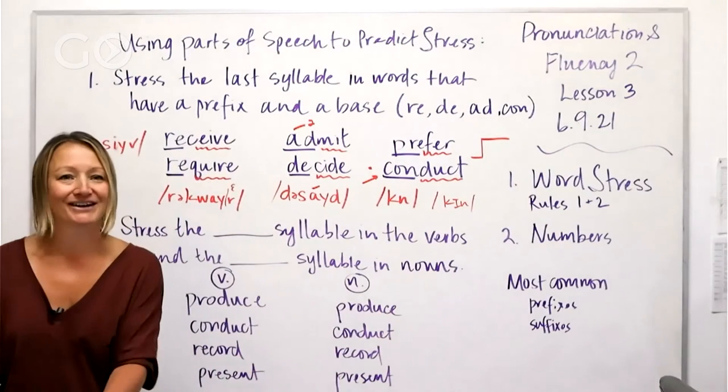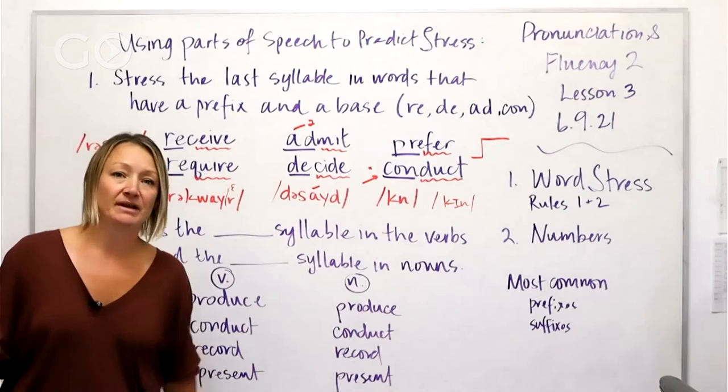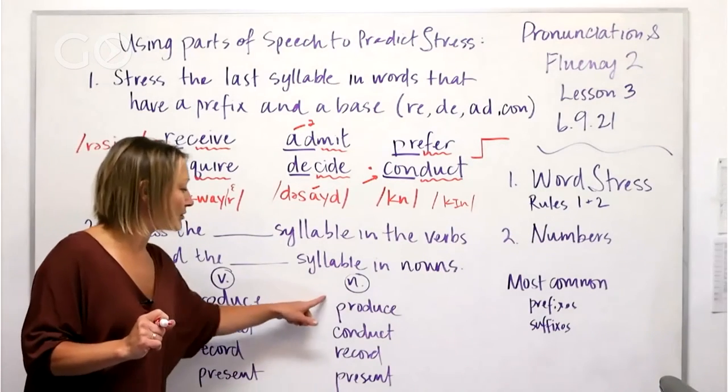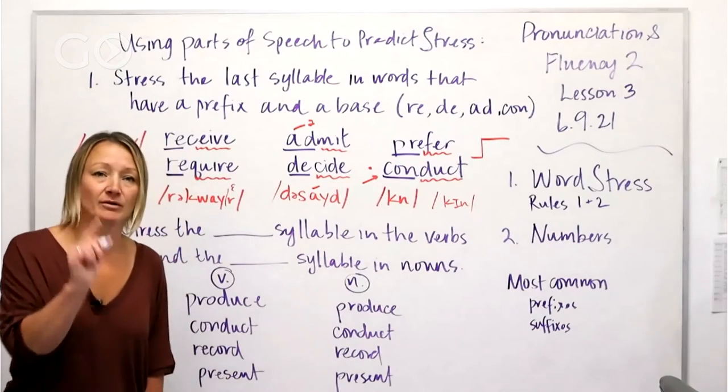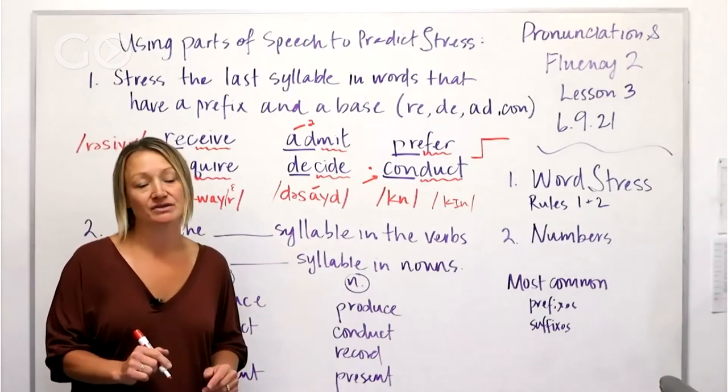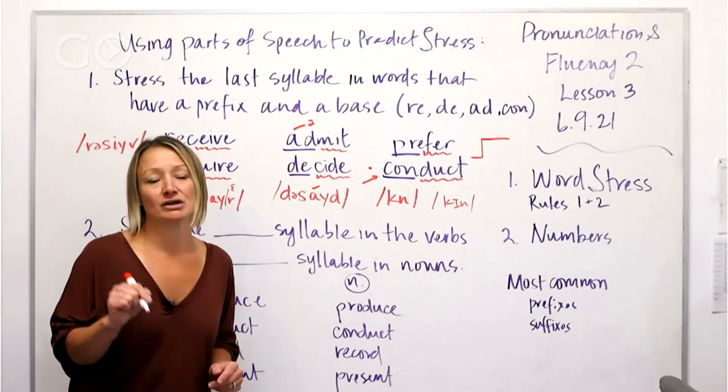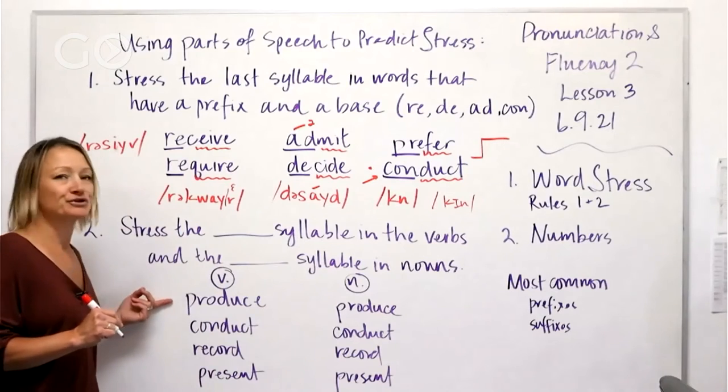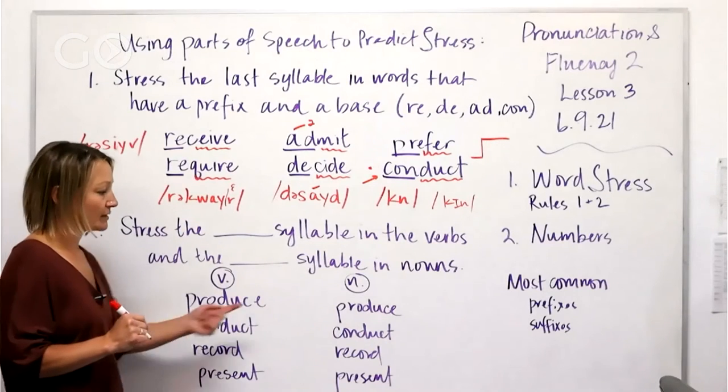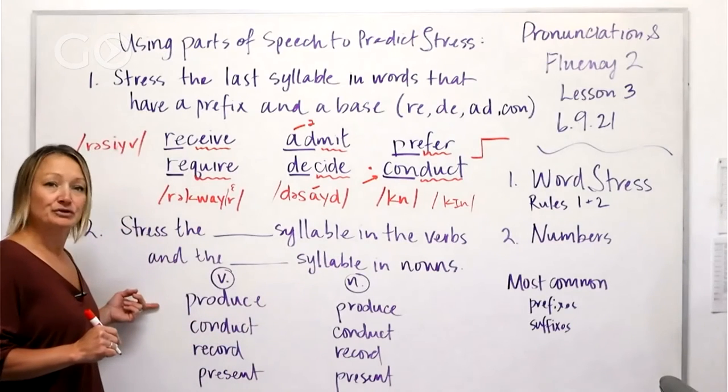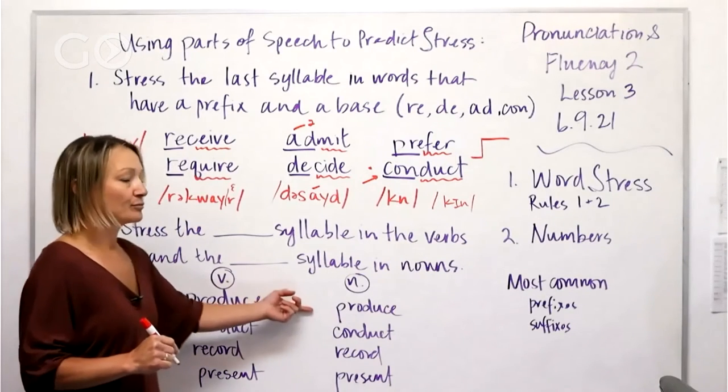Now I'm going to call these verbs and I'm going to call these nouns. Now I'm going to pronounce them as verbs and I'm going to pronounce them as nouns, and I want you guys to hear the difference. So produce, produce, produce, produce, produce.